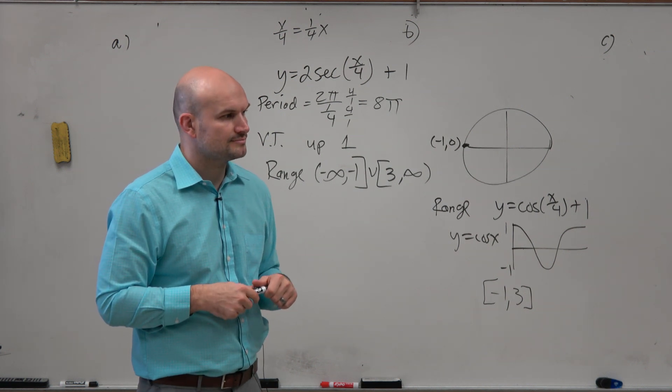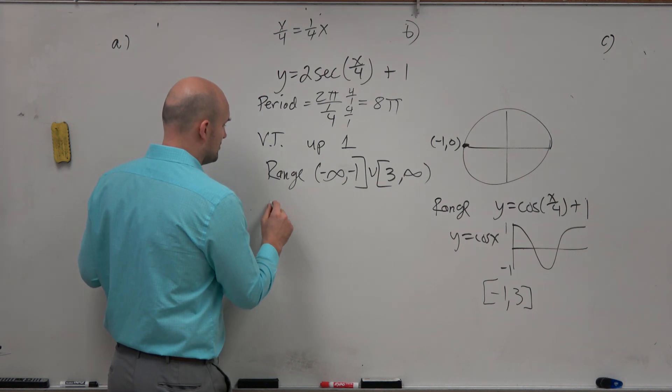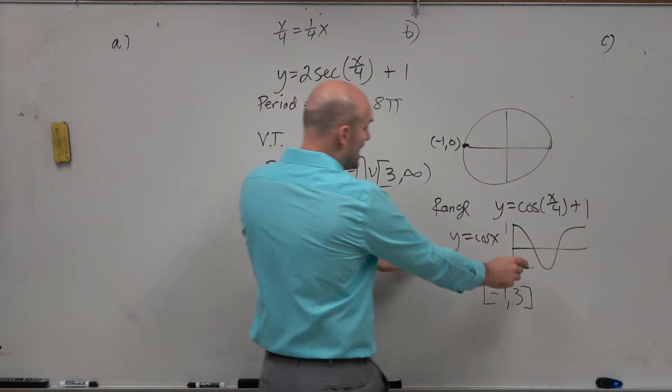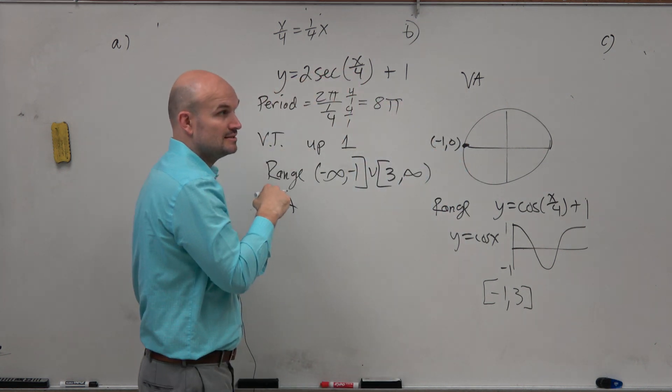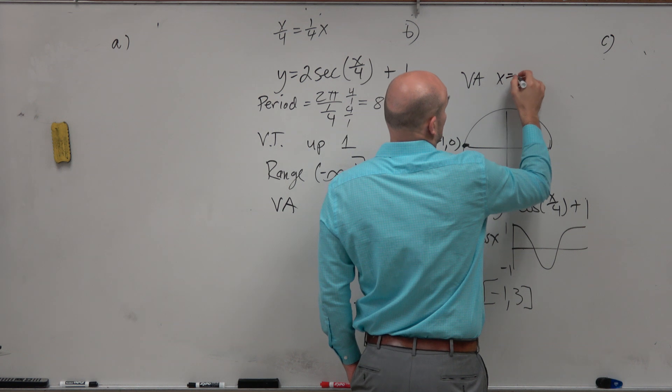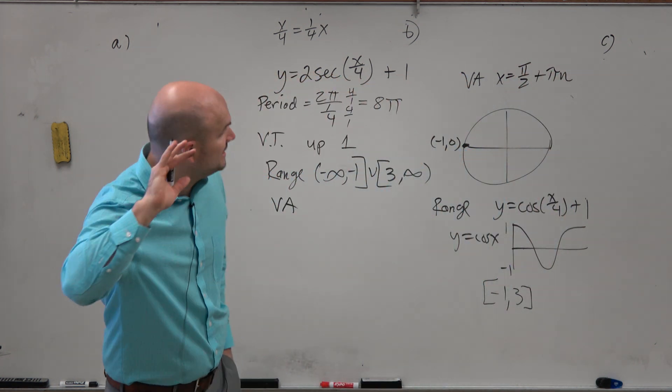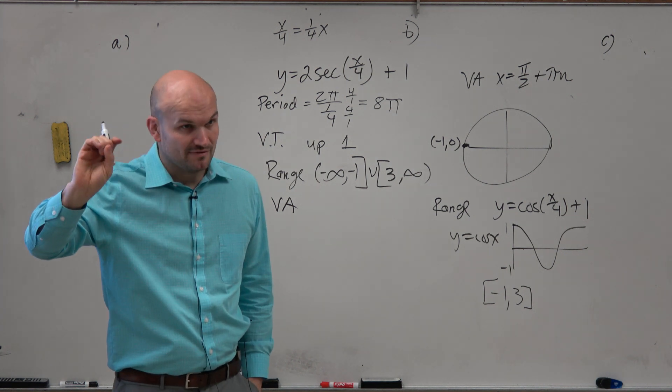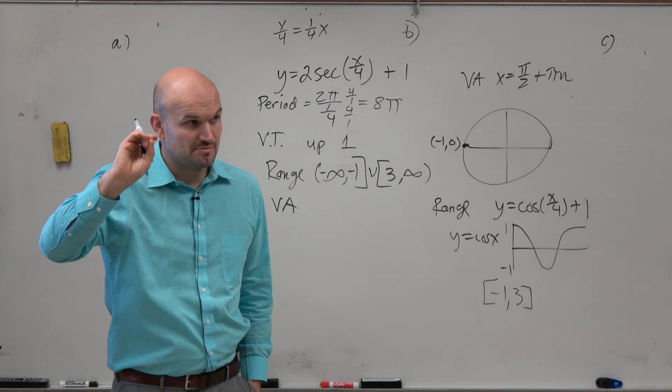OK? And don't worry guys, we'll be doing more practice. Now, vertical asymptotes. The vertical asymptote of this graph, of the parent graph for secant, right? You can look at your graph, you say, OK, in my notes, x equals pi halves plus pi n, right? That was from the parent graph. Pi halves plus pi n.